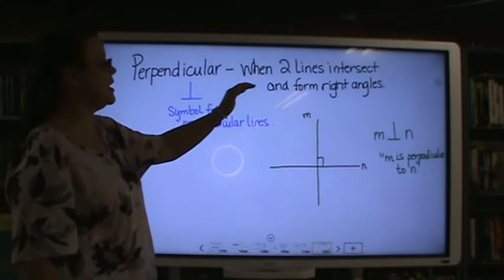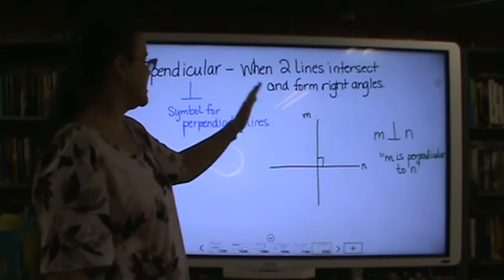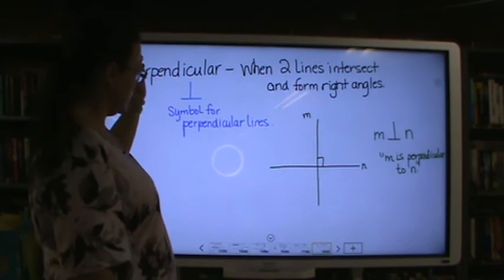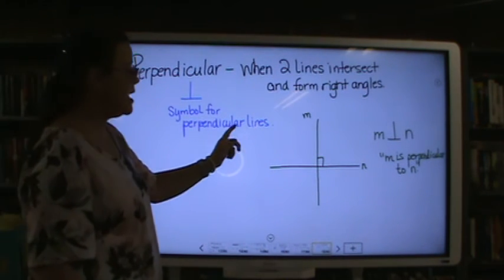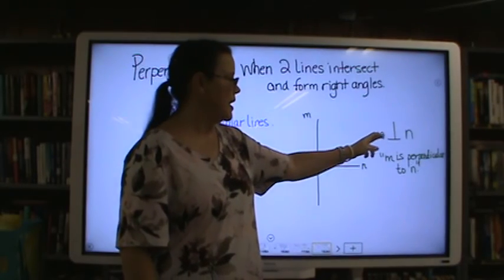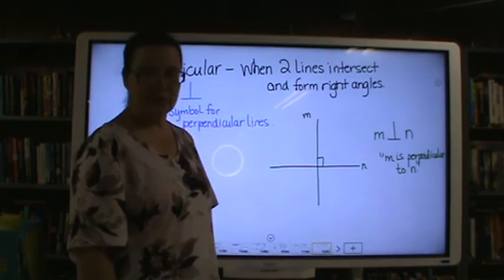Perpendicular lines is when two lines intersect and form right angles. They go up and down straight. Symbol for perpendicular lines would be this upside down T. And M and N are perpendicular to one another.